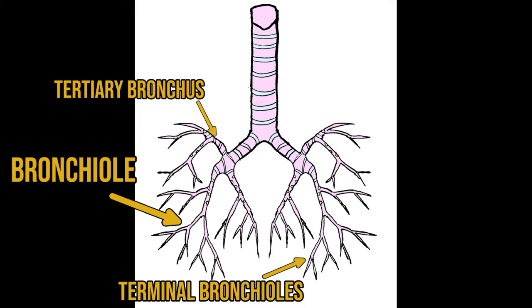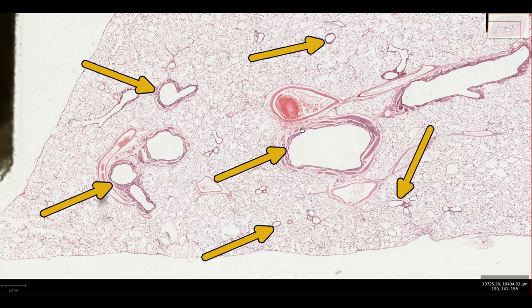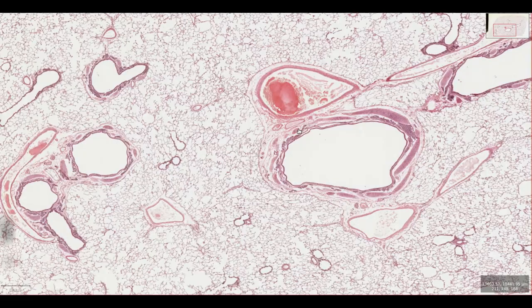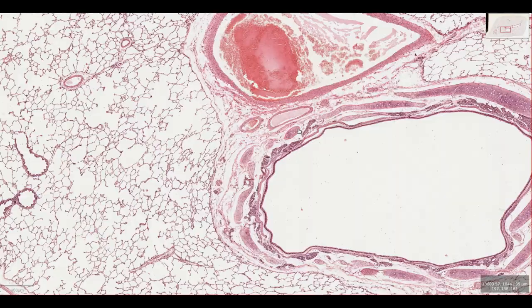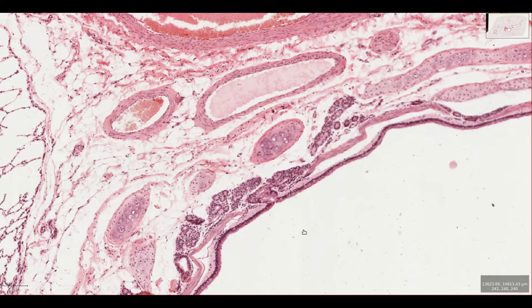This is a slide of inflated cat lung. At low power we can see plenty of round tubular structures, so let's zoom in on the biggest one. This is a bronchus. It's accompanied by blood vessels and nerves. The bronchus has a layered structure, so let's start with the epithelium, the layer forming the boundary between the lumen and underlying tissue.